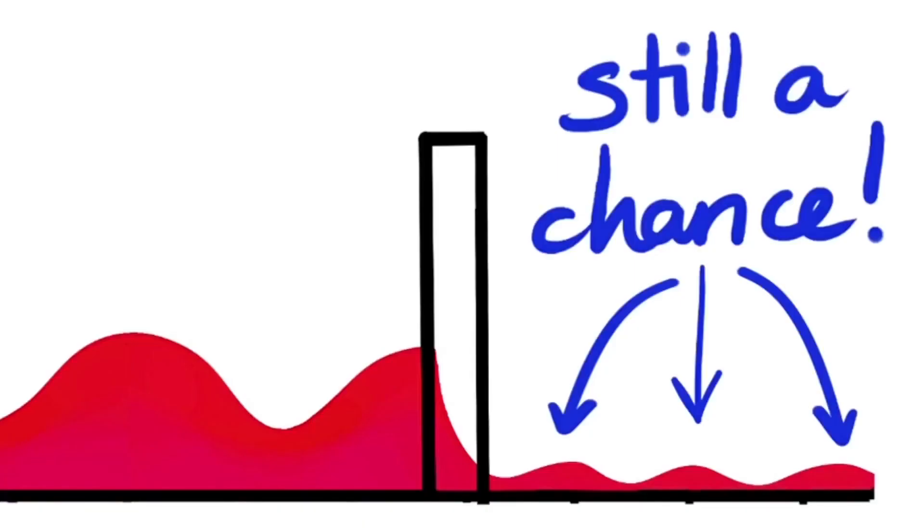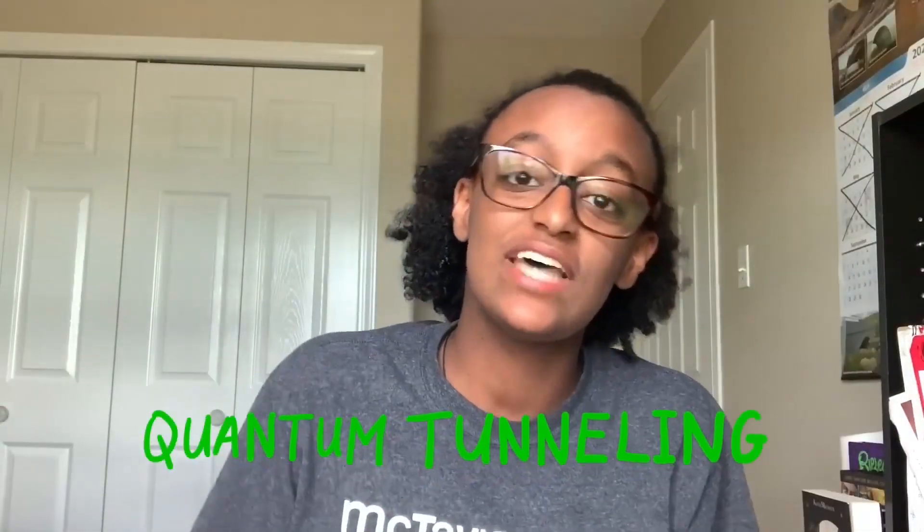So what does that mean? Remember, the wave tells us how likely it is to find the electron there. This means there's a chance we can find our electron on the other side of the barrier. Or in there, too. Once it's on the other side, we can say the electron tunneled through the barrier. This is quantum tunneling, and that's how subatomic particles can walk through walls.